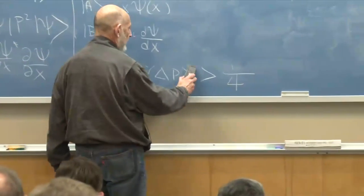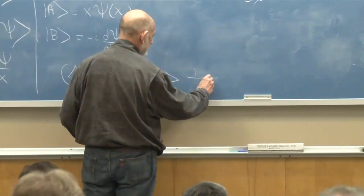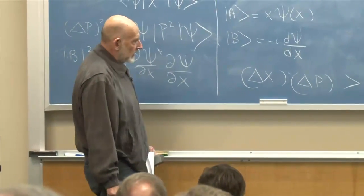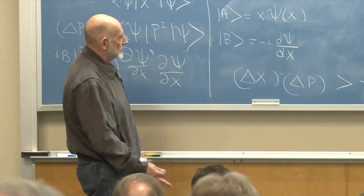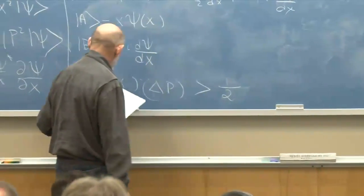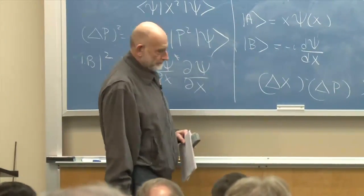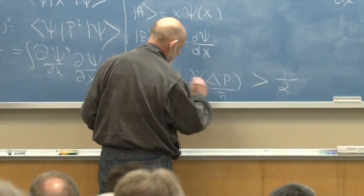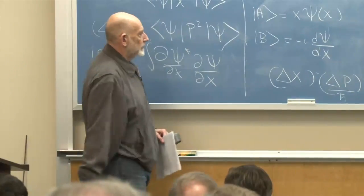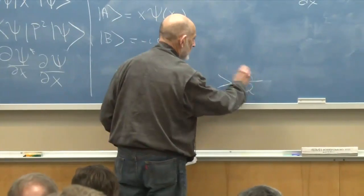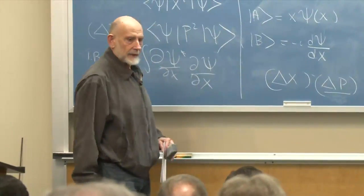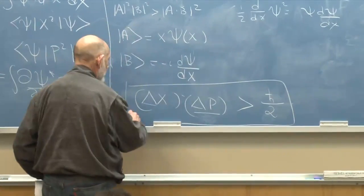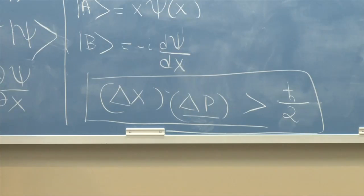We have proved the uncertainty principle from the triangle inequality: delta x squared times delta p squared is bigger than one quarter. Taking the square root of both sides: delta x times delta p is bigger than one half. What about units? X and P are not inverse to each other, so the product can't be a pure number. What is inverse to an x is P over h-bar, so delta x times delta p is bigger than one half h-bar. This is the theorem that asserts the uncertainty principle.